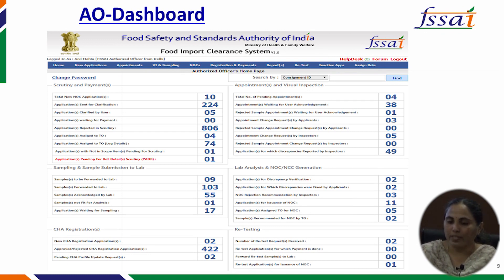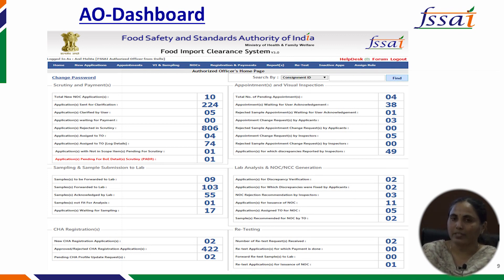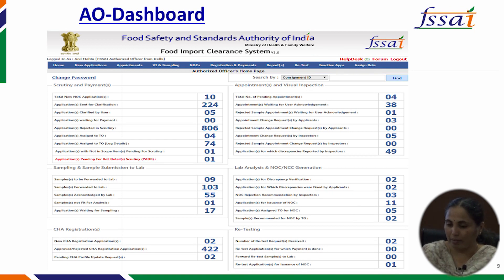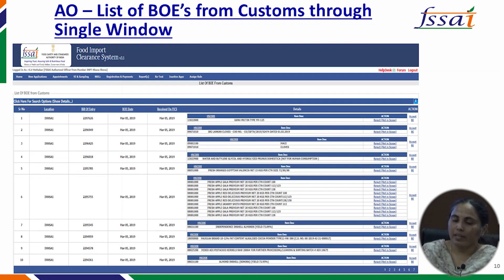These are screenshots of the AO login. The authorized officer's dashboard shows consolidated information on the total number of applications received in a day, applications pending for scrutiny, clarified applications pending for scrutiny, and applications for which payment has been received and is pending for inspection. The bill of entry message received from customs ICE gate appears in the online FICS and shows the basic details of the consignment visible to the AO.